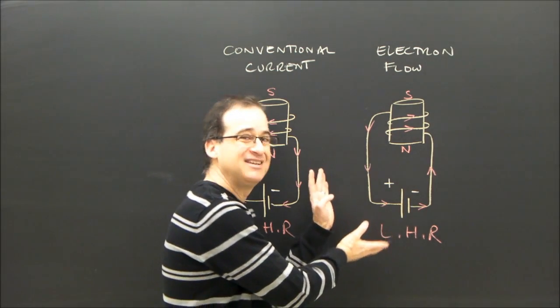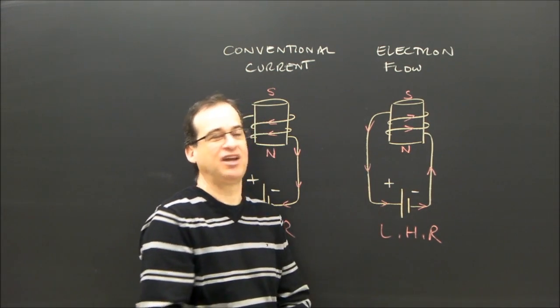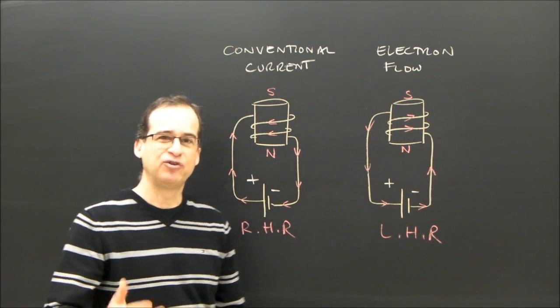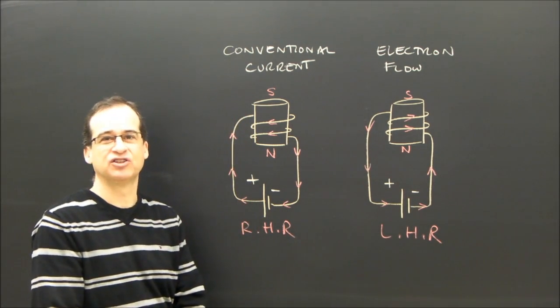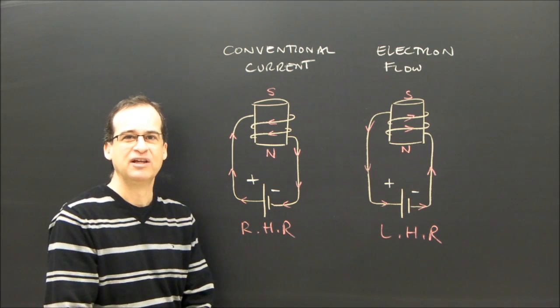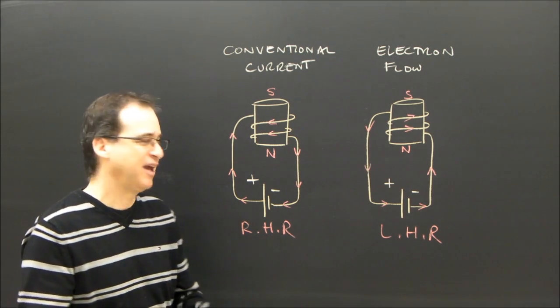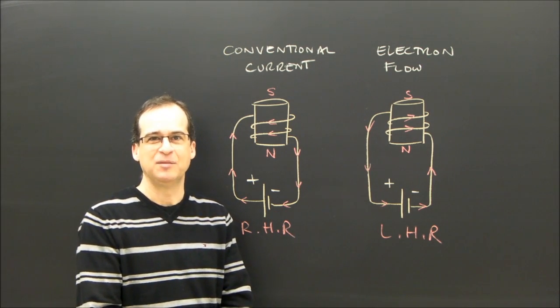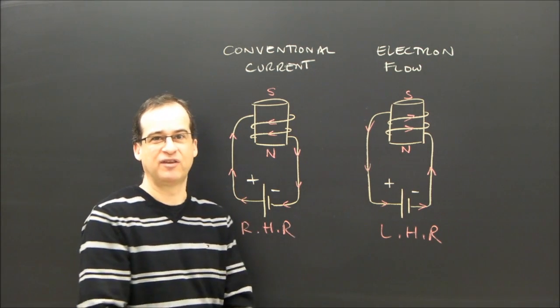Keep in mind, the question in the example was based on the left-hand rule, what we call electron flow. If you're using this method, the conventional current and the right-hand rule, the question would have been different. The arrows for the current would have been going the other way because of the different theory.